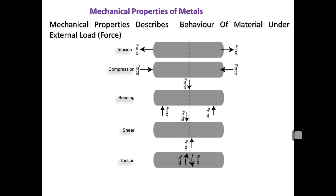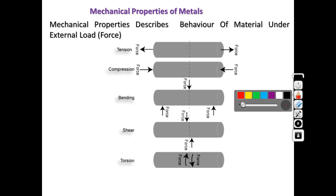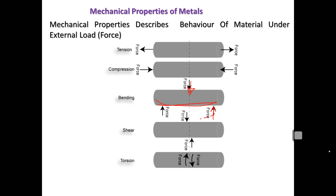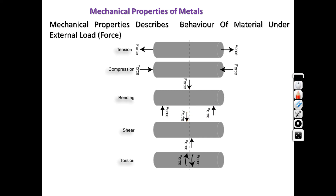First, let's look at the basic natures of different forces. As you can see in this diagram, the first type is tensile force, the second is compressive force, and the third is bending. When force is applied at a point and there is a support, the shaft may flex or bend — that is bending force. Next is shear force, shown in the direction indicated. Then torsion, which is equal and opposite rotational force — basically a twist.